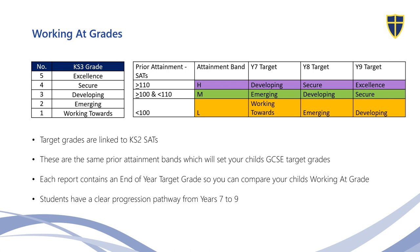This progression is linked to the Department for Education tables published each academic year. So for a middle achieving child that has entered with a SAT score of between 100 and 110 on average, their end of Year 7 target grade in the table shown on the top right hand side would be 'emerging'. At the end of Year 8 they would be 'developing', and at the end of Year 9 they are expected to be 'secure'. You are able to compare your child's working at grade to their target to see whether they are making the expected level of progress or not.